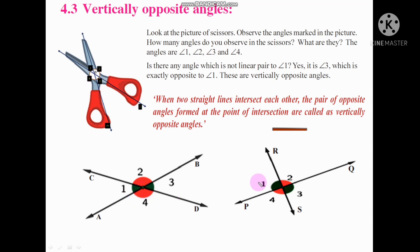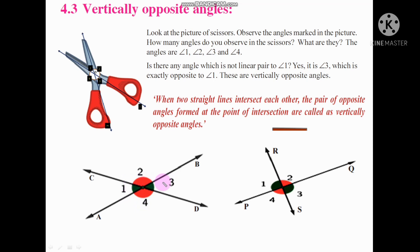We have two figures to identify vertically opposite angles. In figure 1, two straight lines intersect each other. At the point of intersection, the pair of opposite angles are called vertically opposite angles. The figure has points A, B, C, D and two lines form 4 angles. The pairs are: angle 1 and angle 3 are vertically opposite, and angle 2 and angle 4 are vertically opposite angles.